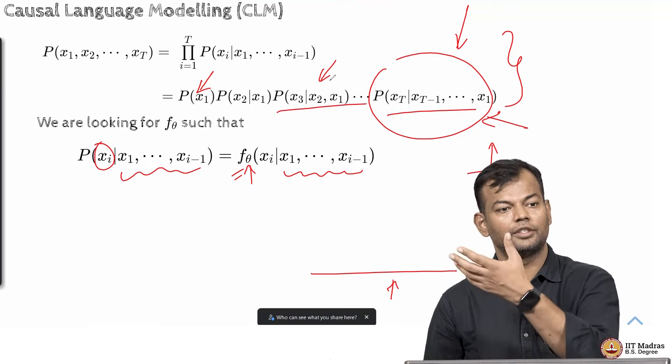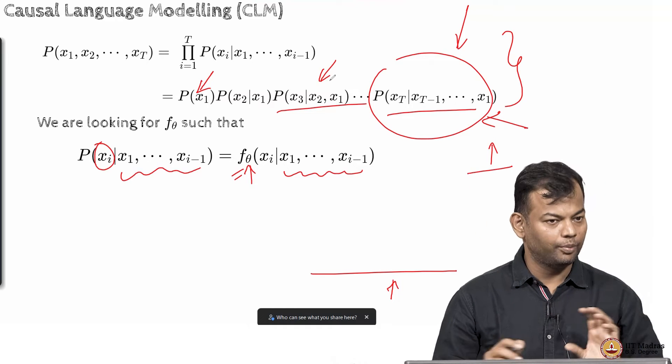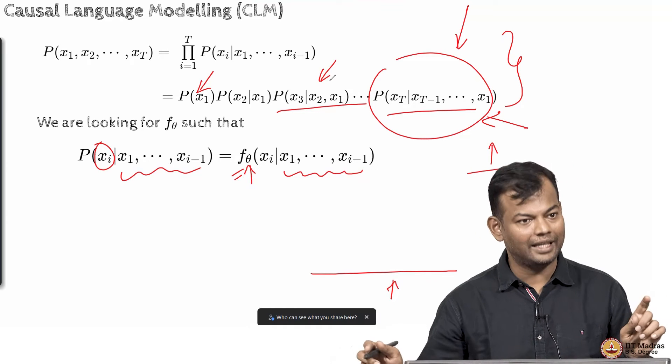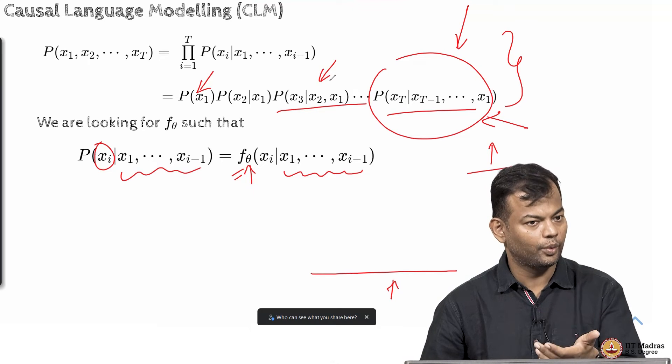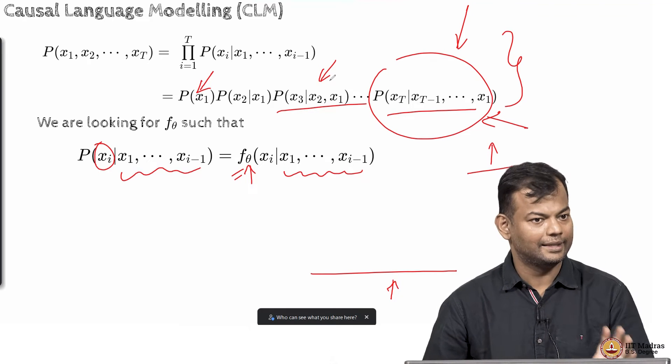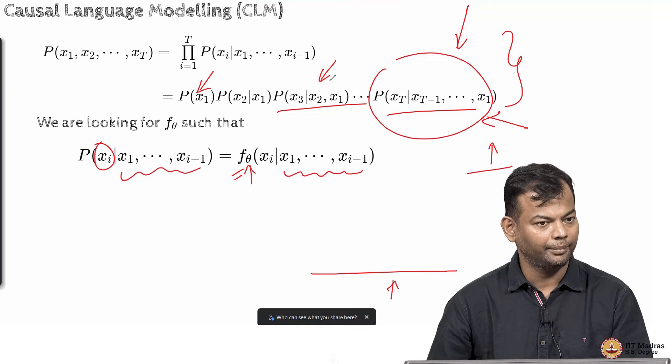Another function which takes four words as input and gives me the fifth word. I want it to be a generic function which takes input of any length and gives me an output distribution over the vocabulary. Right? And a transformer as we know, we can do it. How we will do it? We will see going forward. Is that clear everyone?